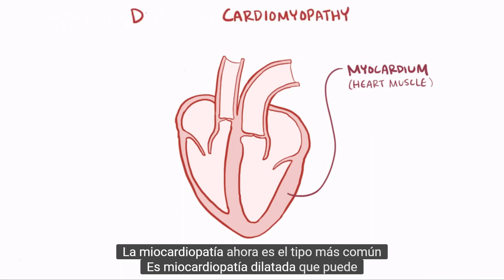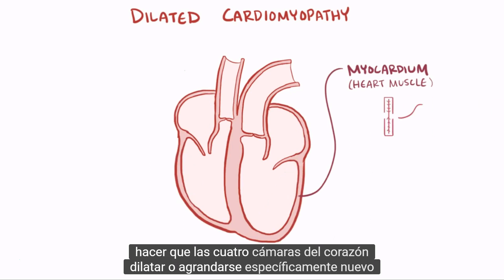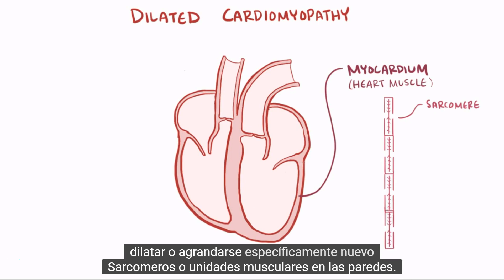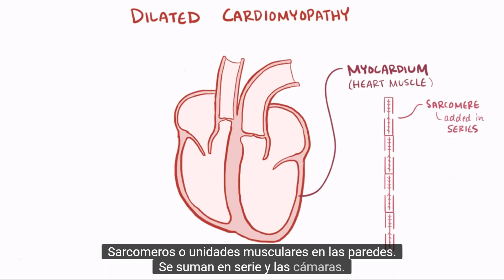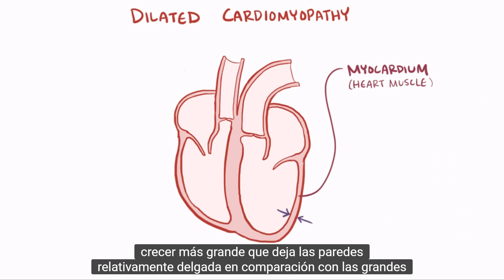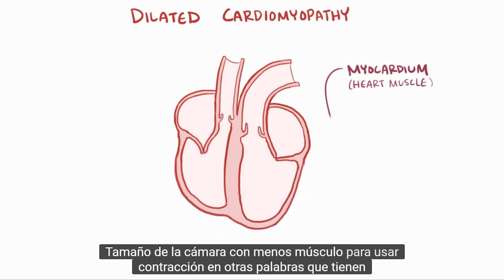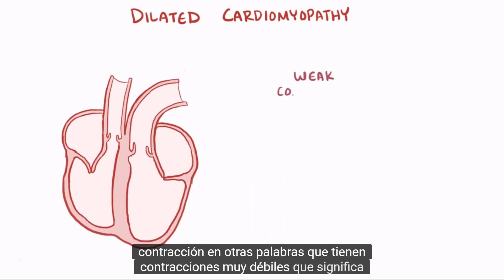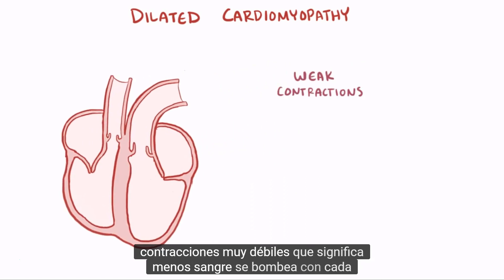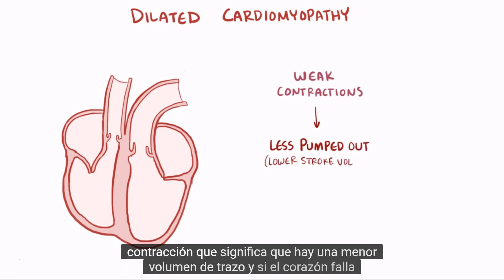The most common type is dilated cardiomyopathy, which can cause all four chambers of the heart to dilate, or get bigger. Specifically, new sarcomeres or muscle units in the walls are added in series and the chambers grow larger, which leaves the walls relatively thin compared to the large chamber size with less muscle to use for contraction. In other words, they have really weak contractions, which means less blood gets pumped out with each contraction, meaning there's a lower stroke volume.